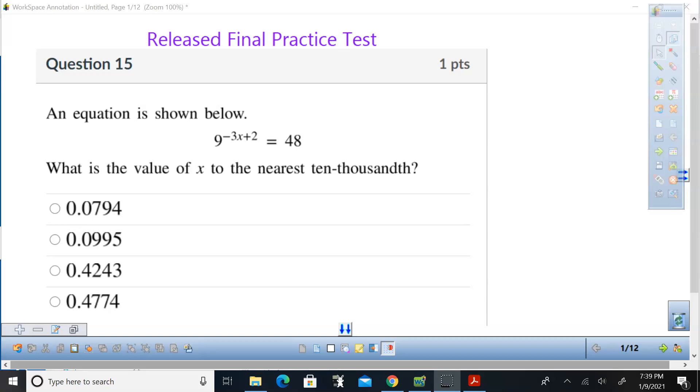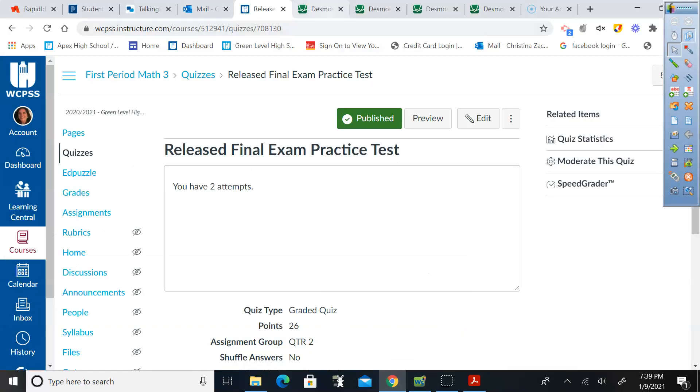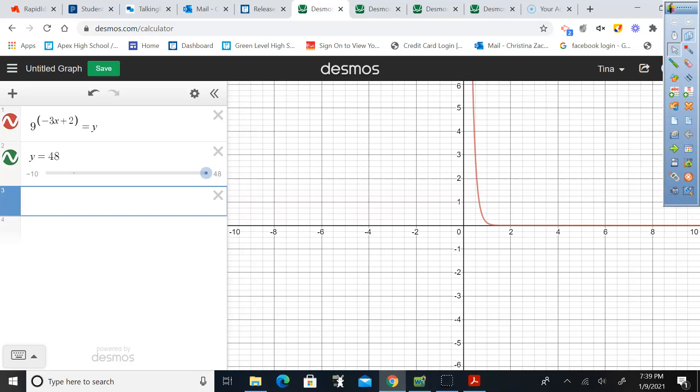Okay guys, I am going to be going over the released final practice test, starting with number 15, since that's where we left off in our last class. So I'm going to show you how to do this with Desmos, and if you would just go to the Desmos calculator online, I have that already typed in. I've got 9 raised to the negative 3x plus 2 equal to y, that's the left side, and then I have the right side, y equals 48. So what you want to do is you want to see where these intersect.